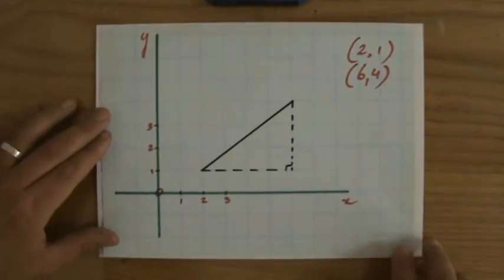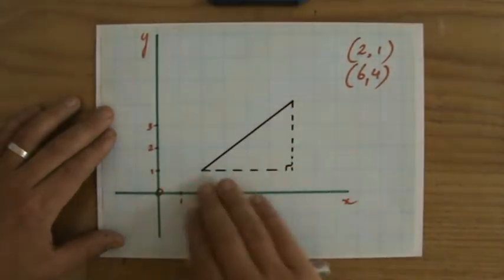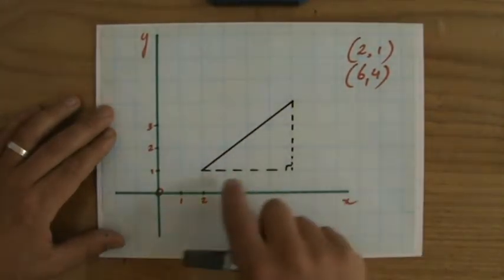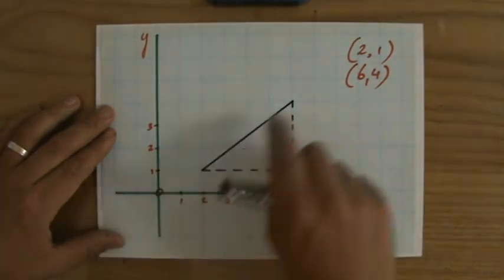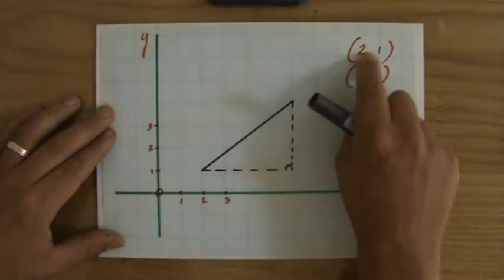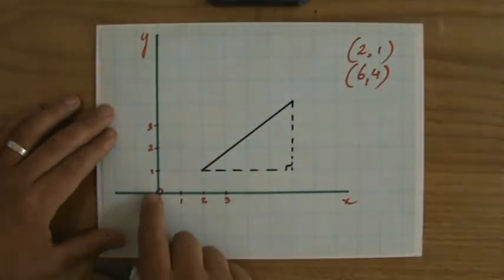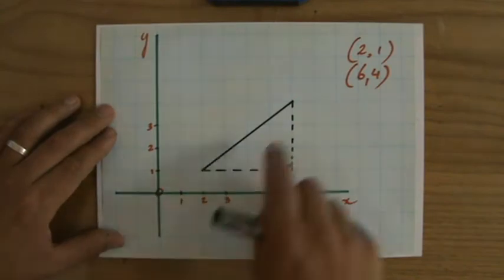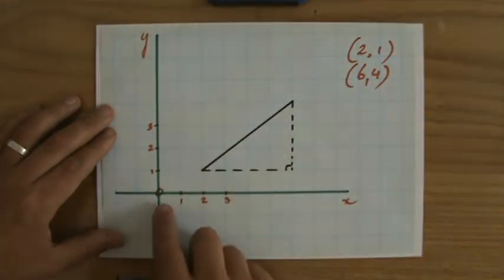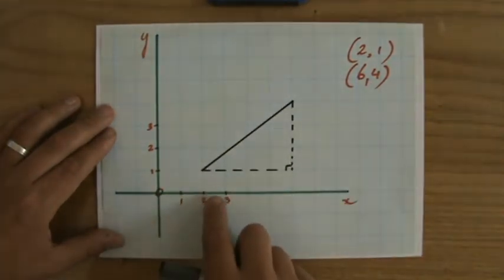So what did I do? I draw for you the two coordinates already and the line segment. So coordinate 1 was 2, 1. That's 2, 1. And the other coordinate was 6, 4.